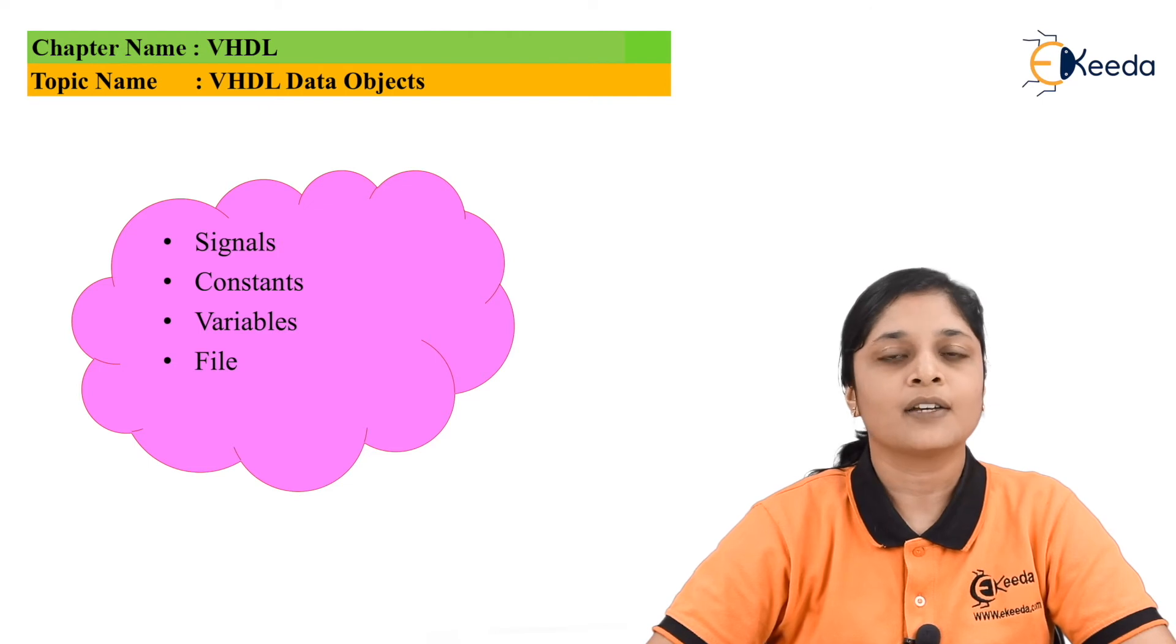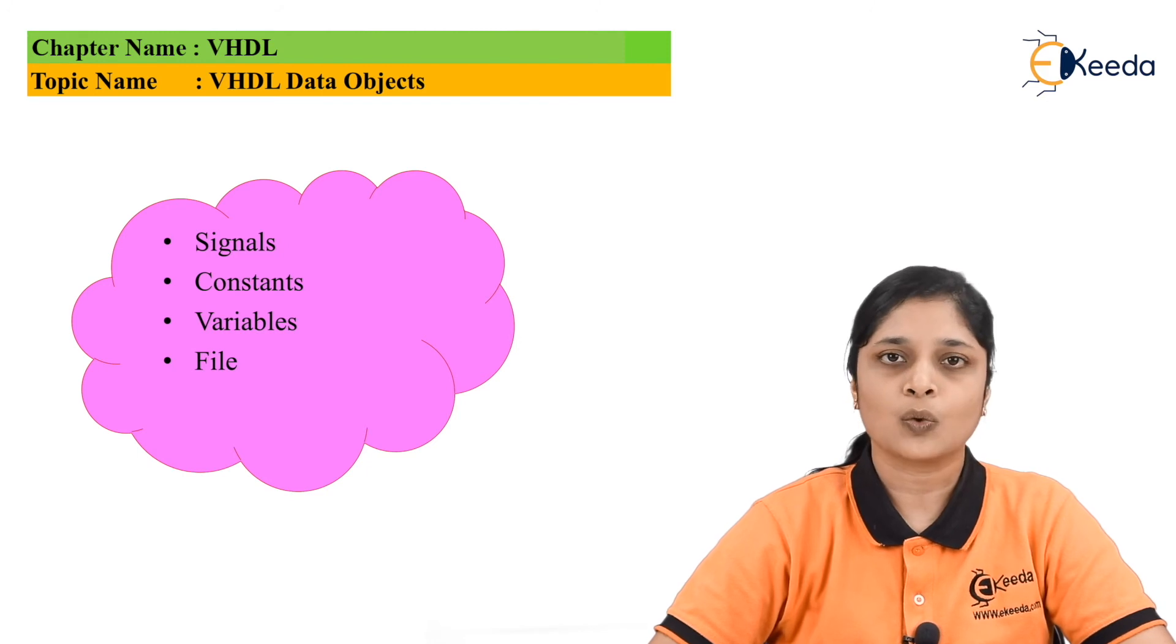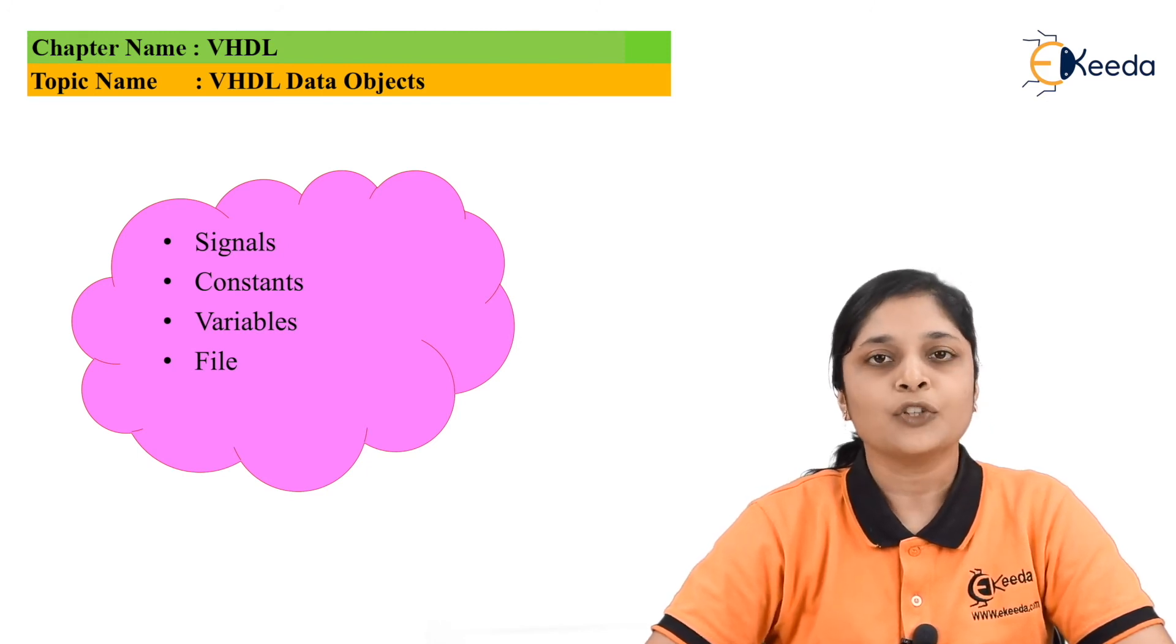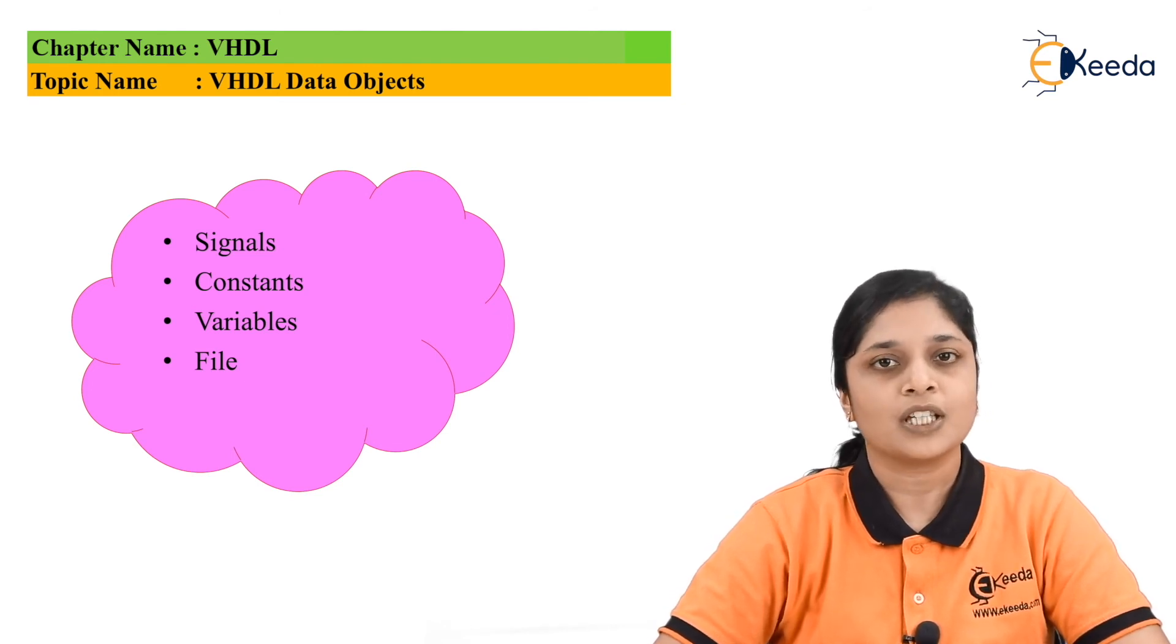So we have the data objects: first is signal, second is constant, third is variable, and fourth is the file. With the use of all these data objects you can store the numbers as per the applications. Thank you for watching this video. Stay tuned with Keeda and subscribe to Keeda.